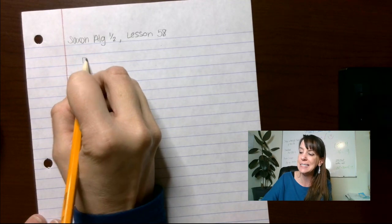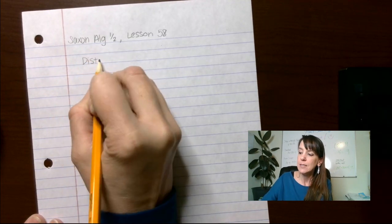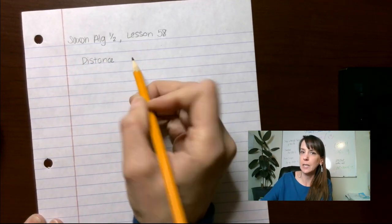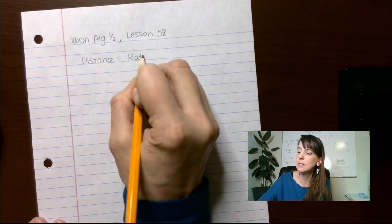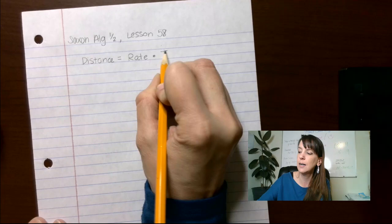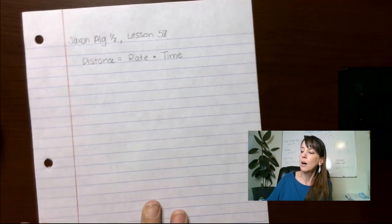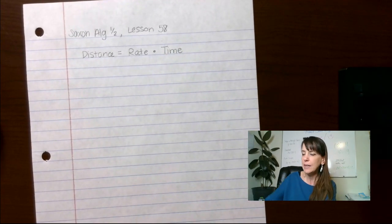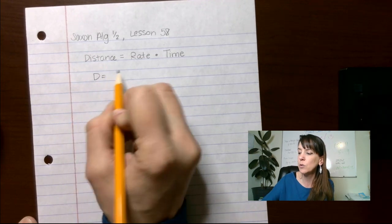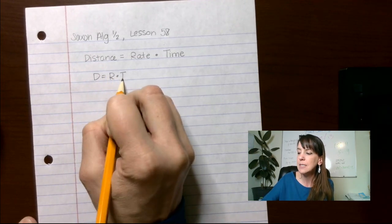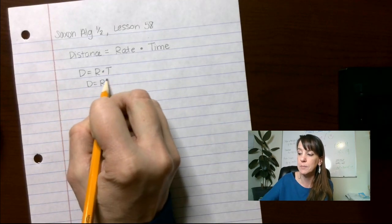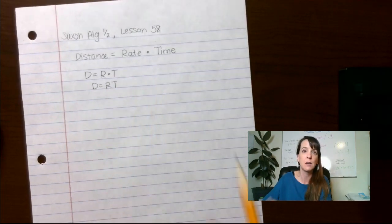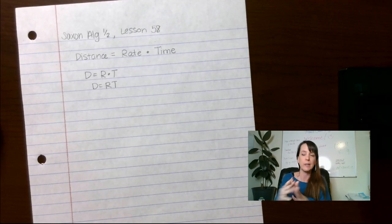Here's what you need to know about distance. Distance equals rate times time. We abbreviate that as d = r × t. We don't even need to put the multiplication dot because when we have two variables smashed together, we know we're multiplying those.